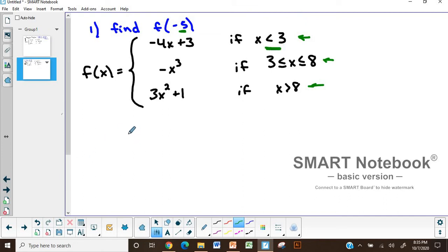So our value of the function f evaluated at -5 is going to be defined by -4 times -5 plus 3. When we evaluate that, -4 times -5 is positive 20, plus 3 is 23.